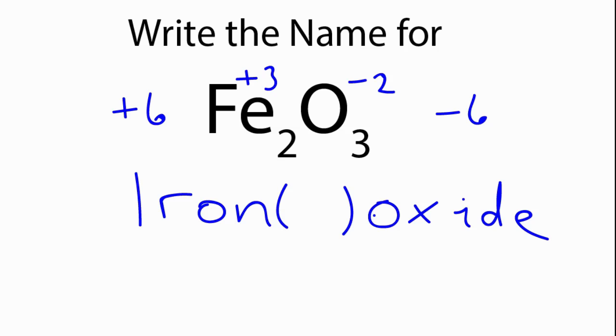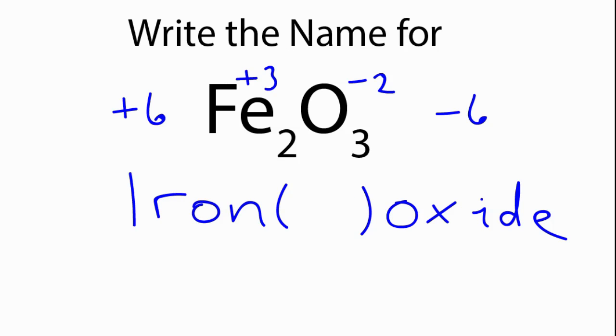That means that each iron atom has a positive 3 charge, and we can write that right here between iron and the oxide. So since it's plus 3, we'll use the Roman numeral 3 here to show that each iron atom has a plus 3 charge.